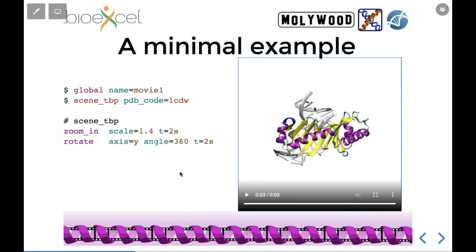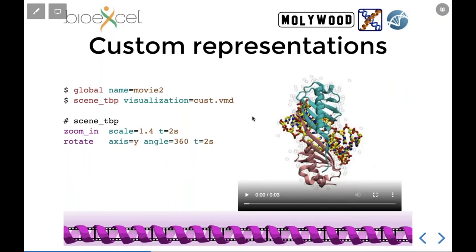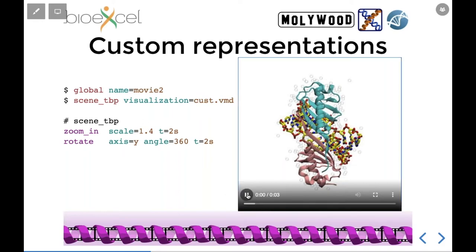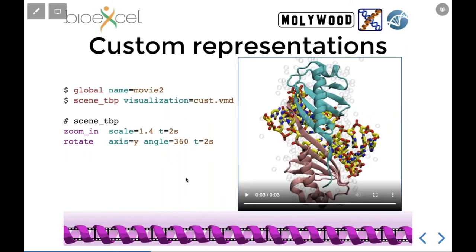This is the most basic thing you should be able to get running in under a minute. The default representation is new cartoon for the protein with standard secondary structure coloring and DNA without colors. If you want something different, VMD users can go into VMD, add representations - for instance transparent water molecules, different colors for protein symmetry, licorice for nucleic acids - save as a visualization state, and provide that visualization state as a parameter. The movie then uses those custom representations.